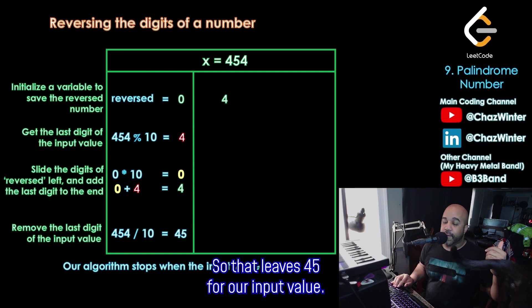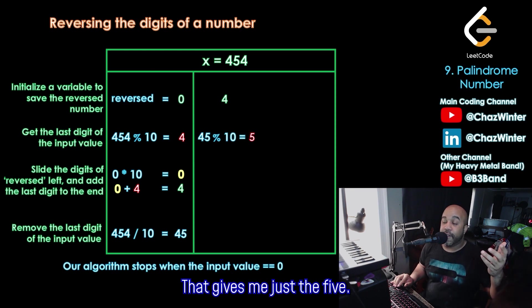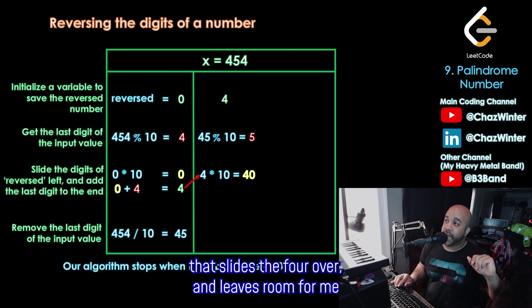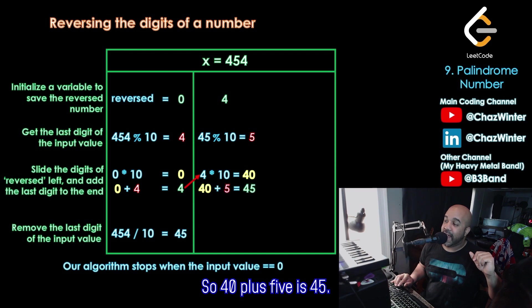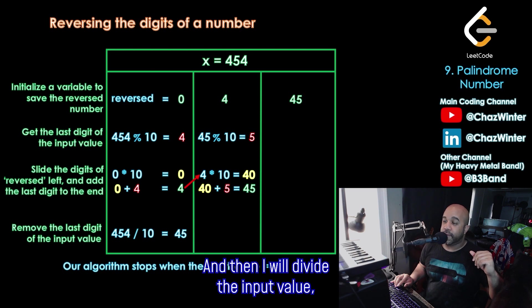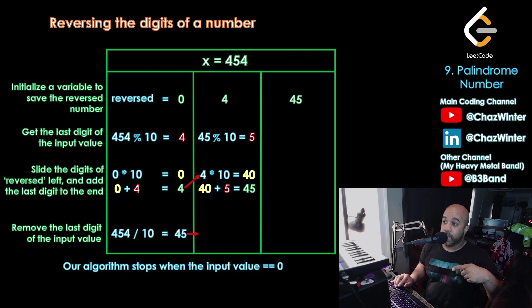So that leaves 45 for our input value. So I'll do mod 10 of that number. That gives me just the 5. I can take reversed, multiply it by 10. That slides the 4 over and leaves room for me to add the 5 that we got from the previous step. So 40 plus 5 is 45. I'll move that green 45 up to the top to stay organized. And then I will divide the input value, which is also 45 right now, the one in blue, divide that by 10, leaving me with just 4.